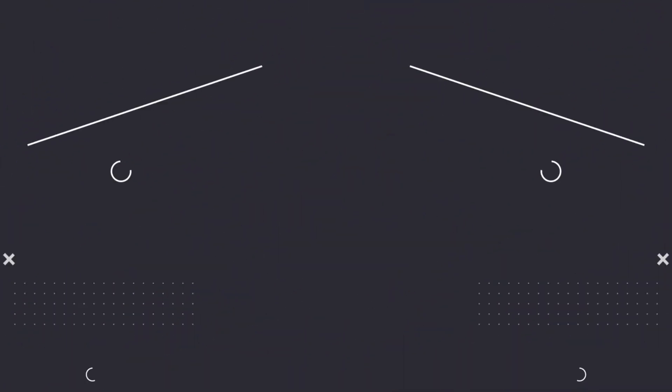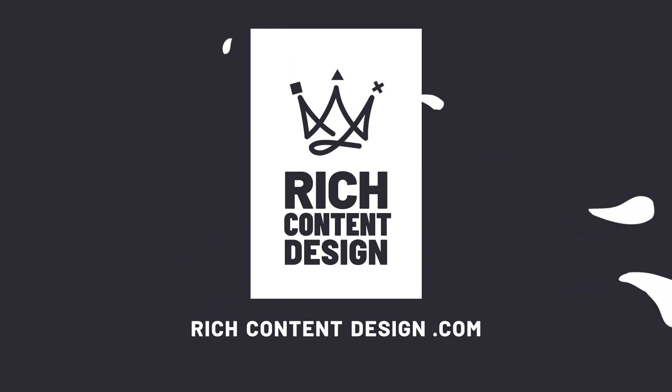Did you know Tumult Hype now gives you full control over vector shapes and shape animations? This short video will get you up to speed. One of the most exciting new features of the latest Tumult Hype release is the Vector Shape Tool. You can now draw and animate vector graphics right into Tumult Hype. This opens up fascinating new possibilities.